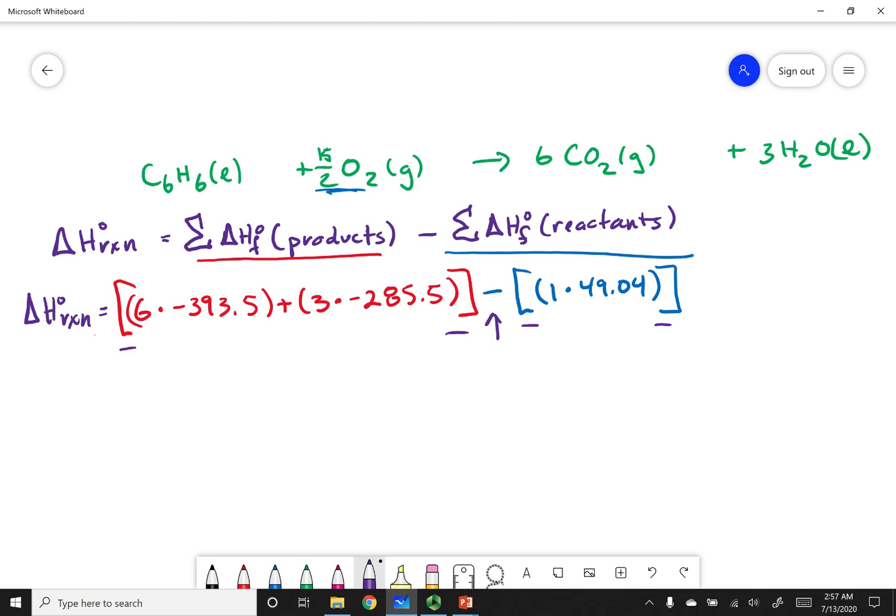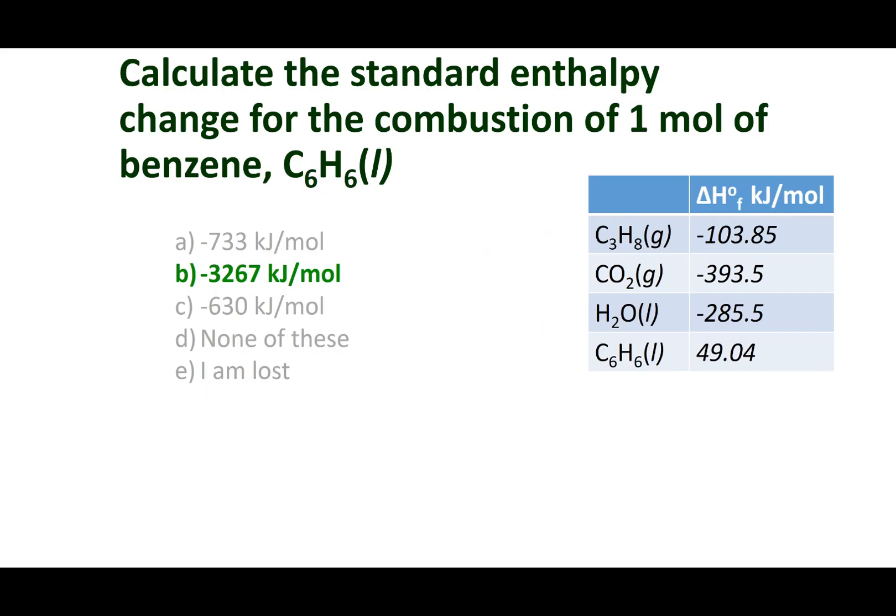Let's crank the number out. If I do this calculation, this turns out to be negative 3,267 kilojoules. I hope that made sense, Chem 1B, and remember to stay safe.